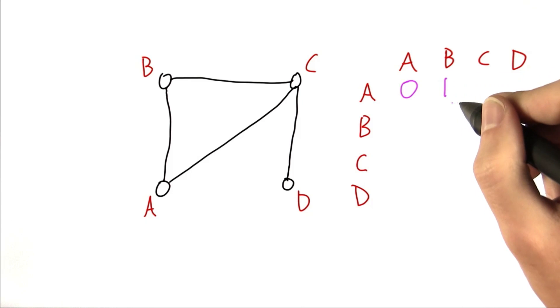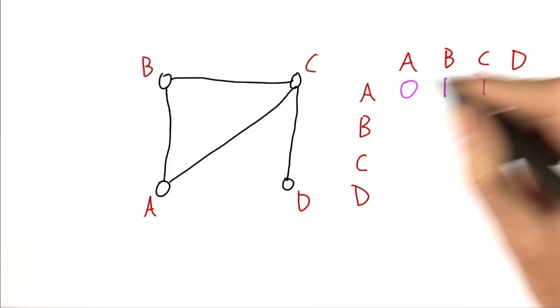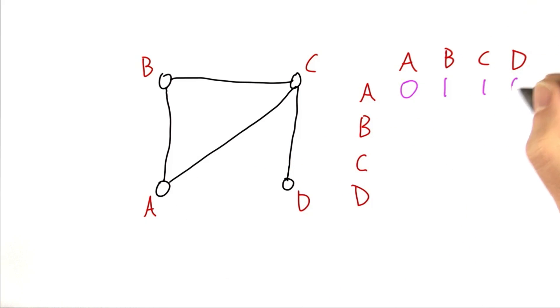A, however, is connected to B, and we're going to specify that by putting a 1 in this location. Similarly, A is connected to C, and A is not connected to D, at least not directly.